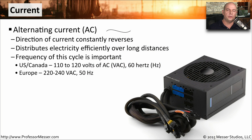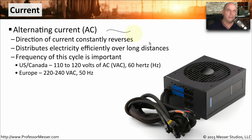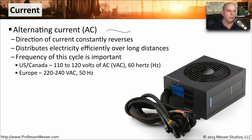Our computers use both alternating current and direct current. Alternating current is often abbreviated AC, described with a wavy line. It's called alternating current because the direction of the current is constantly changing or alternating. It's a very efficient way to run power over very long distances, which is one of the main reasons we use alternating current on our power lines.